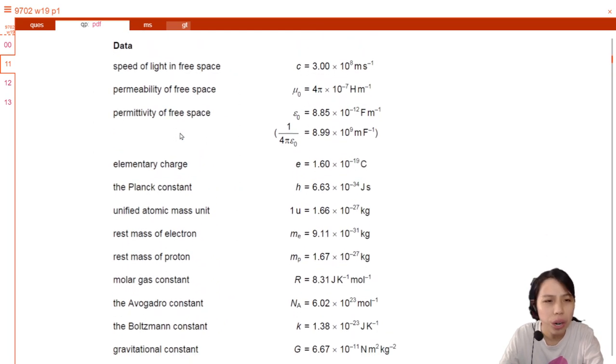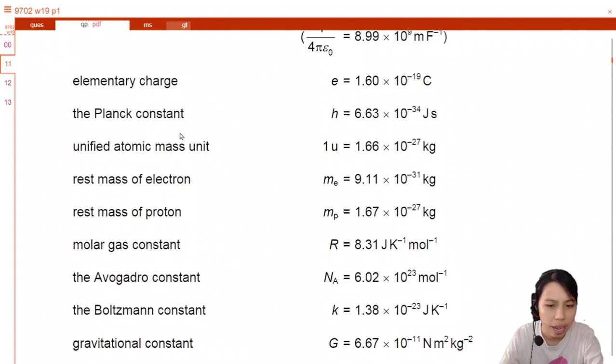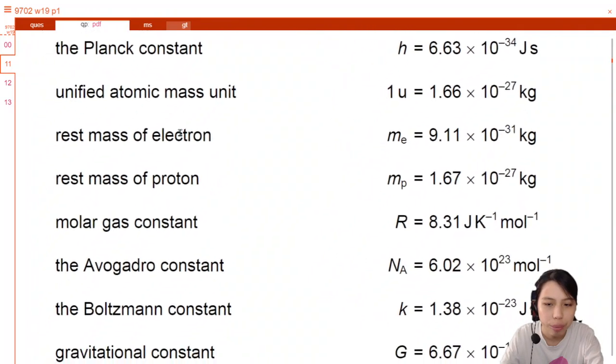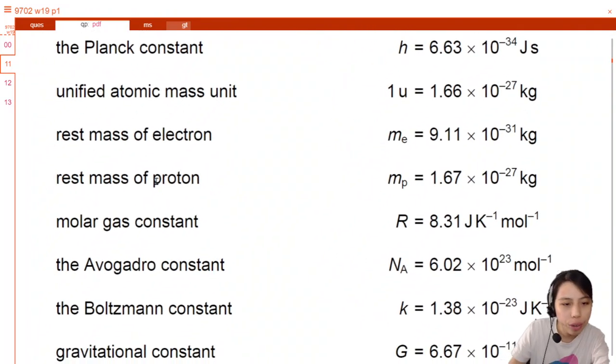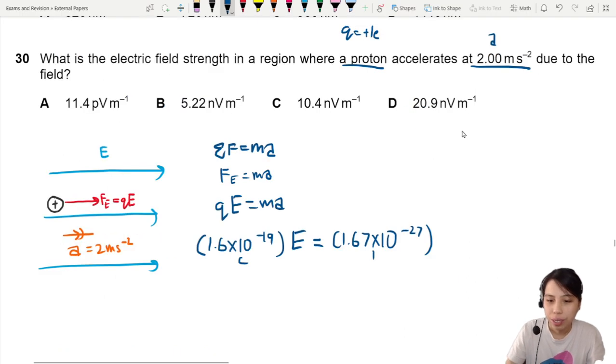We are looking for proton. There we go. Let's zoom in a little bit. So rest mass of a proton. You need to know where to find all this information. So 1.67 times 10 to the negative 27 which is in kg.